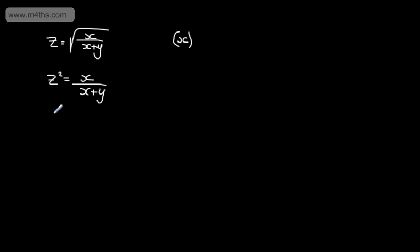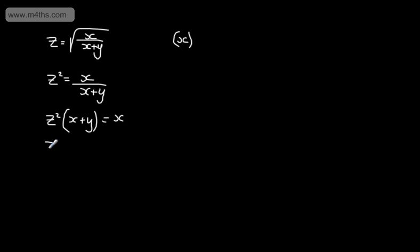At this stage, I'm going to multiply both sides by the denominator of the fraction. That will give me Z squared multiplied by the quantity X plus Y is equal to X. I'm now going to expand the bracket, so I've got Z squared X plus Z squared Y is equal to X.